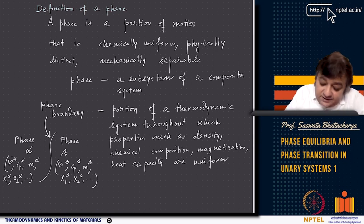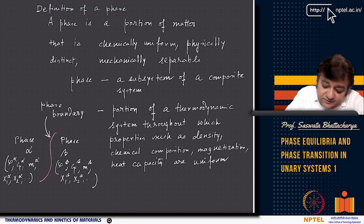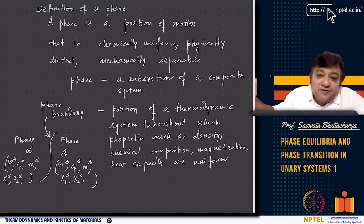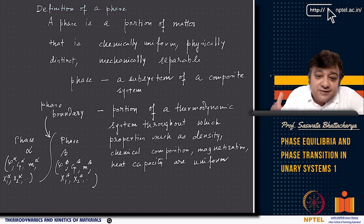If you think of a phase boundary, it can be a hypothetical or physical phase boundary. If you look under a microscope in a eutectic system, you will see two different phases — like cementite and ferrite — with a distinct phase boundary that separates them.